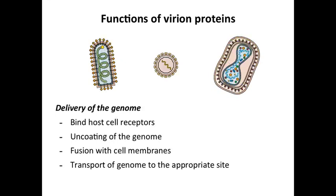On the other side, these virion proteins have to protect the genome but also deliver it to the cell. In most cases, the genome gets out of the particle or is released in some way. They have to bind cell receptors and participate in uncoating — the release of the genome into the cell. For enveloped viruses, the membranes have to fuse with a cellular membrane for the genome to get from inside the particle to inside the cell. Finally, the genome has to be brought to the right place — sometimes deeper into the cytoplasm, sometimes into the nucleus — which you can predict from the Baltimore scheme.